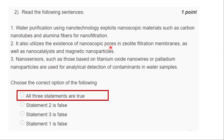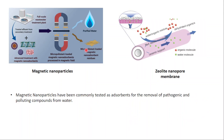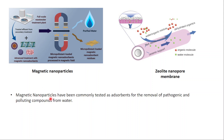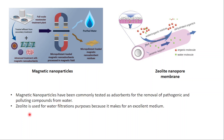The other part of statement two covers zeolite nanopore membranes. Water from organic waste passes through zeolite membranes functionalized with certain groups — organics get dehydrated and pure water molecules are led out. Sodium zeolite membranes are used as ceramic support. Statement two is totally true — magnetic nanoparticles and zeolite nanopore membranes are both used for water purification. Magnetic nanoparticles have been commonly tested as adsorbents for removal of pathogenic and polluting compounds from water.